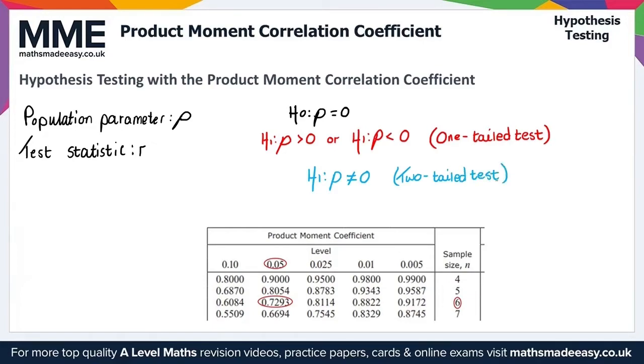So the only thing left to consider here is using our formula book to obtain our critical value. Now here we can see a portion of the formula book here at the bottom. And what we can see is the significance level given here. We have the sample size given here as n. So in that case, we can use our sample size n and the significance level to obtain our critical value.